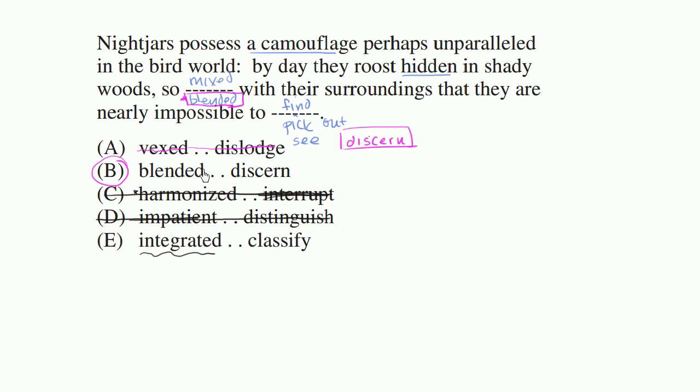So if I didn't have choice B here, maybe I could somewhat argue for choice E. But the key to realize is you need to pick the best choice. So E is kind of a not horrible choice. It's still a little bit strange. But B is way, way better. So we could rule out E as well.